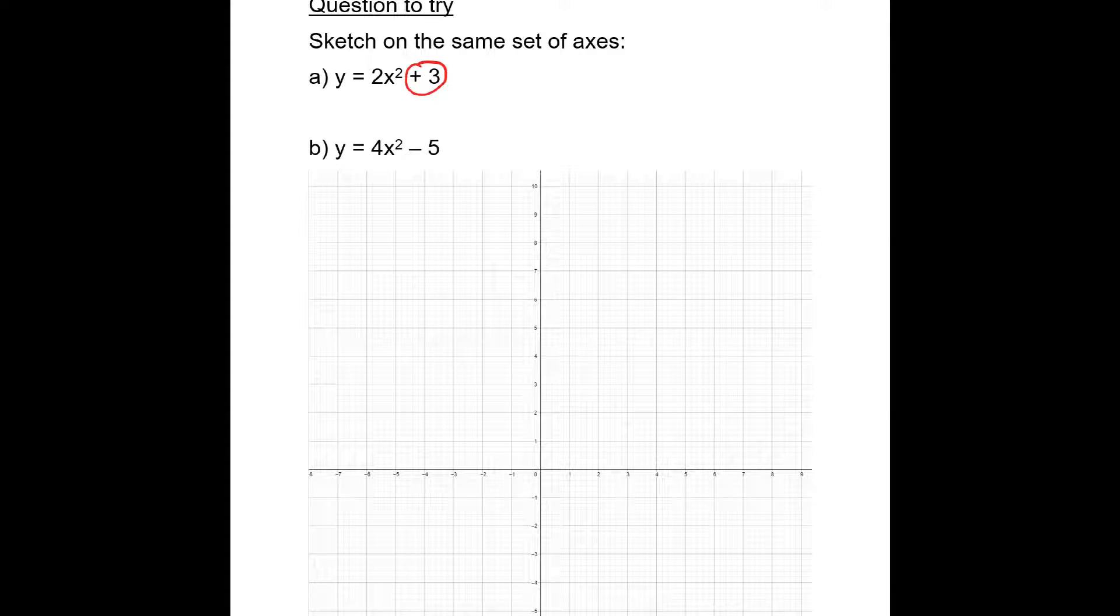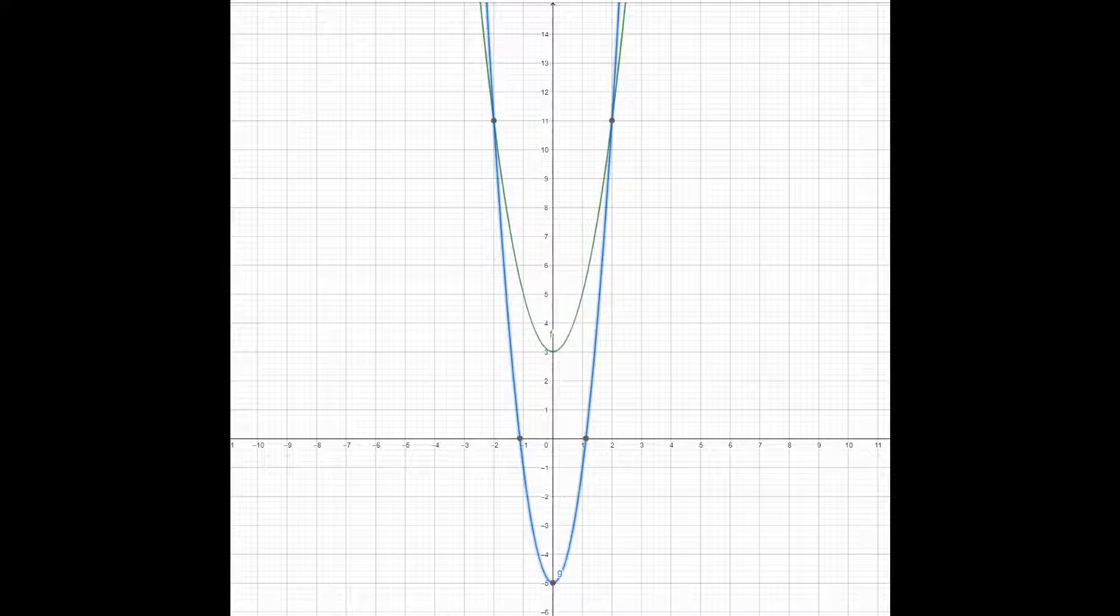Here is the answer. Your graphs should look something like this. The first one, 2x squared plus 3, should have a turning point at (0, 3) and the other one should have a turning point at (0, -5). Those are the main features that we need.